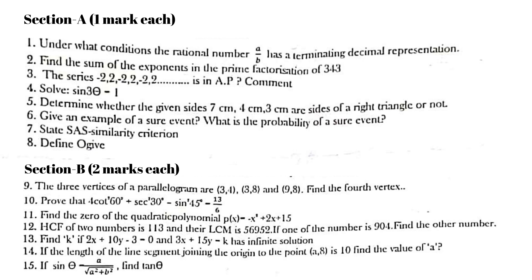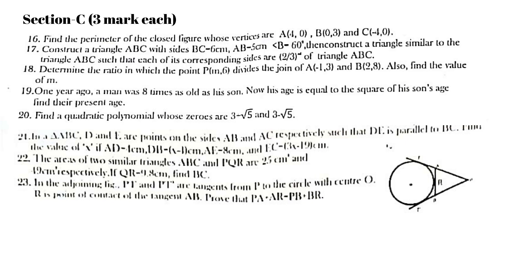Then section C carries 20 marks and each question carries 3 marks each. Find the perimeter of the closed figure whose vertices are A(4, 0), B(0, 3) and C(−4, 0). Construct a triangle ABC with sides BC = 6 cm, AB = 5 cm, and the third side = 6 cm, then construct a triangle similar to triangle ABC such that each of its corresponding sides are 2/3 of triangle ABC.